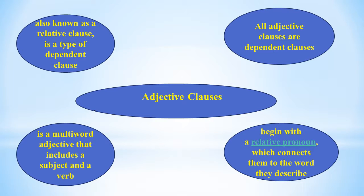All adjective clauses are dependent clauses. A dependent clause is a group of words that consists of a subject and a verb, yet it is not a complete sentence that can stand alone. Adjective clauses begin with a relative pronoun which connects them to the word they describe, such as that, where, when, who, whom, whose, which, or why. Once you remember the relative pronouns, it's very easy to pick out an adjective clause in a sentence.